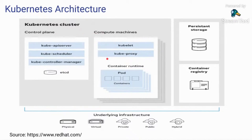Kubernetes can run on any infrastructure. It can be physical infrastructure, virtual machines, a private network, public network, a hybrid cloud, or any devices that can run Kubernetes processes — even edge devices. There are a lot of edge devices that come with Kubernetes runtime. The underlying infrastructure can be anything.